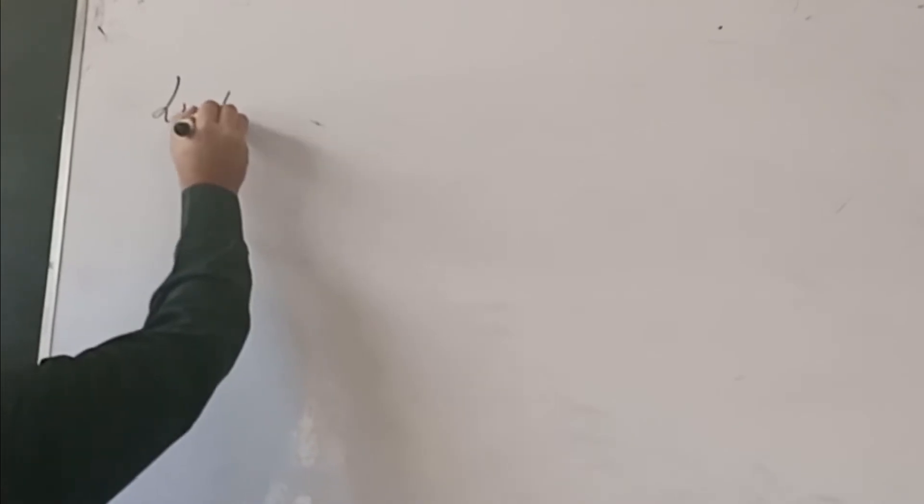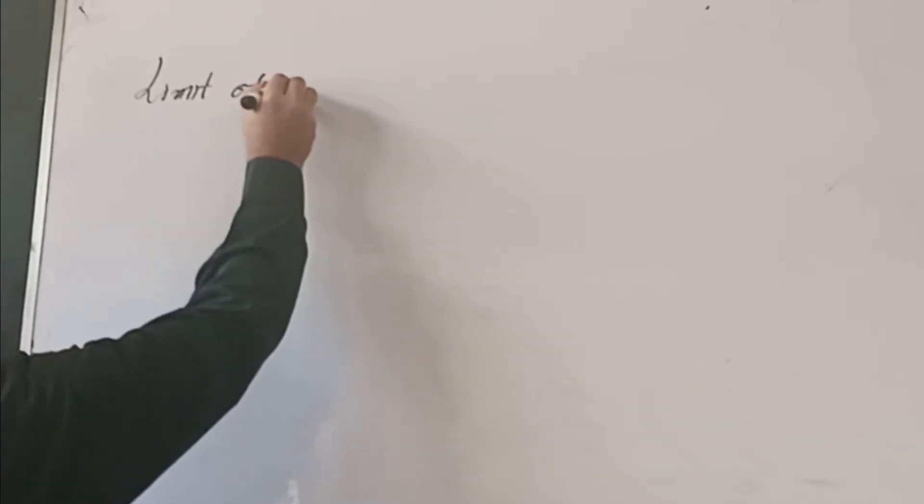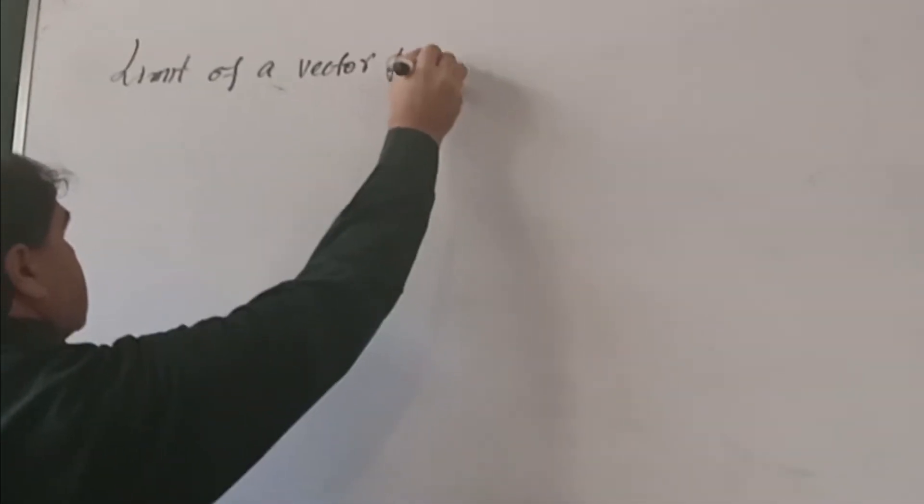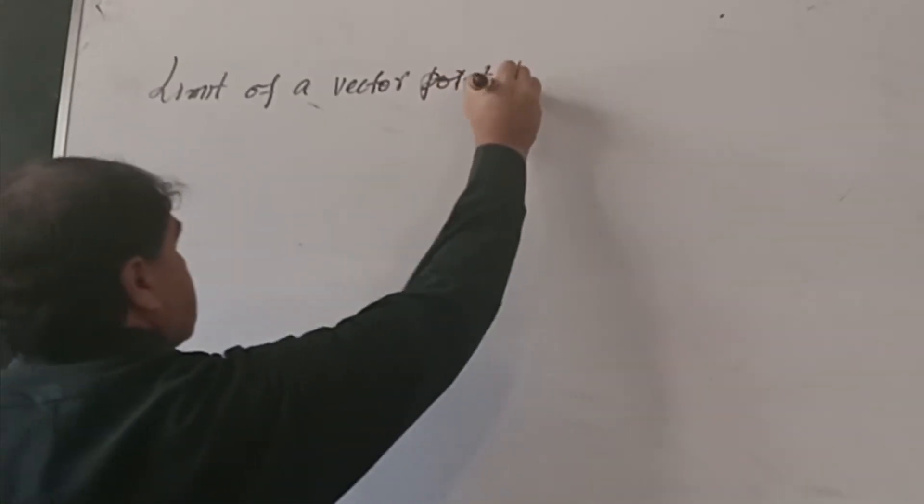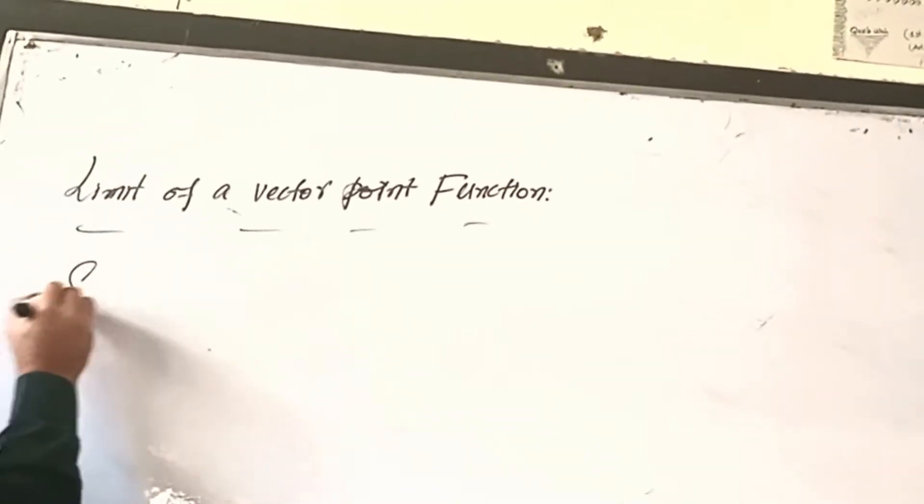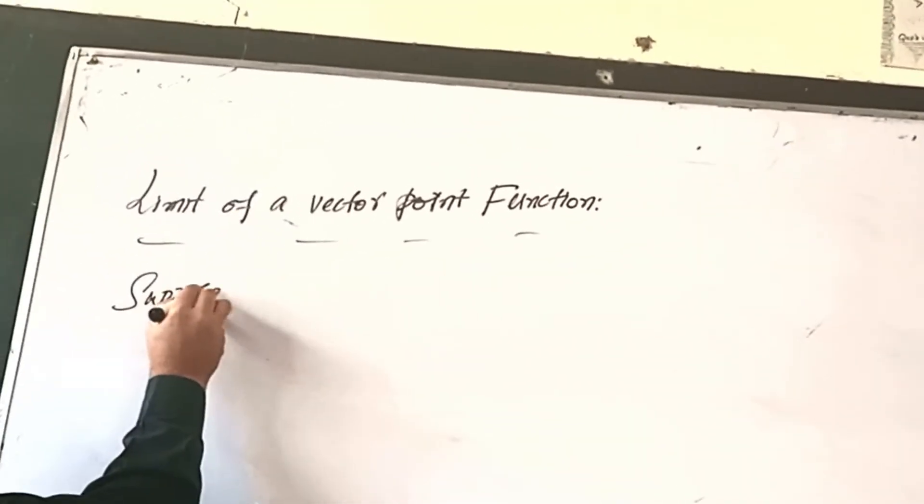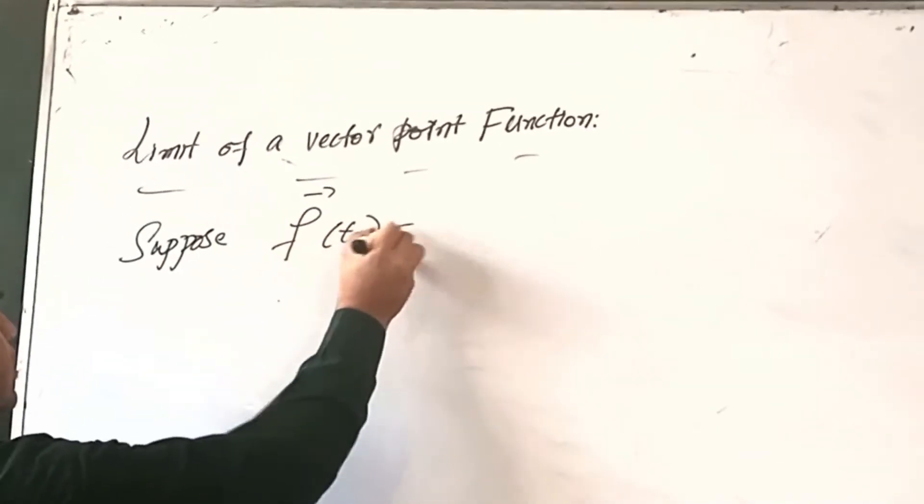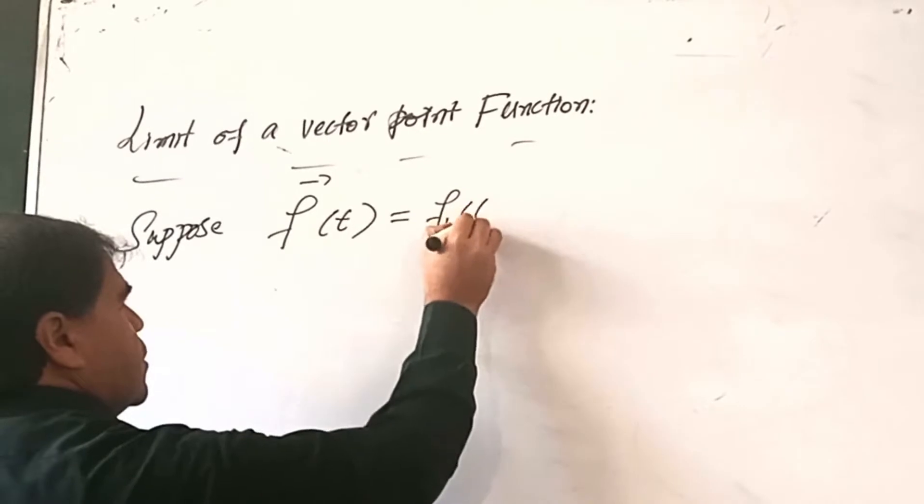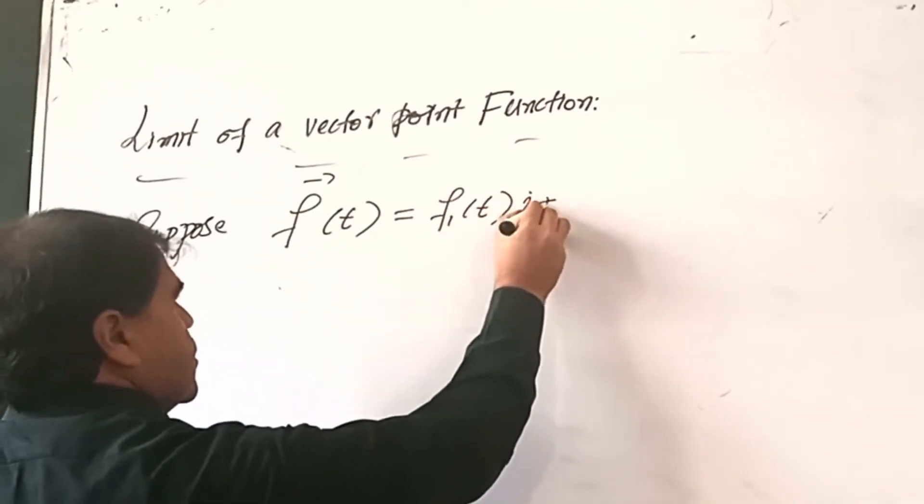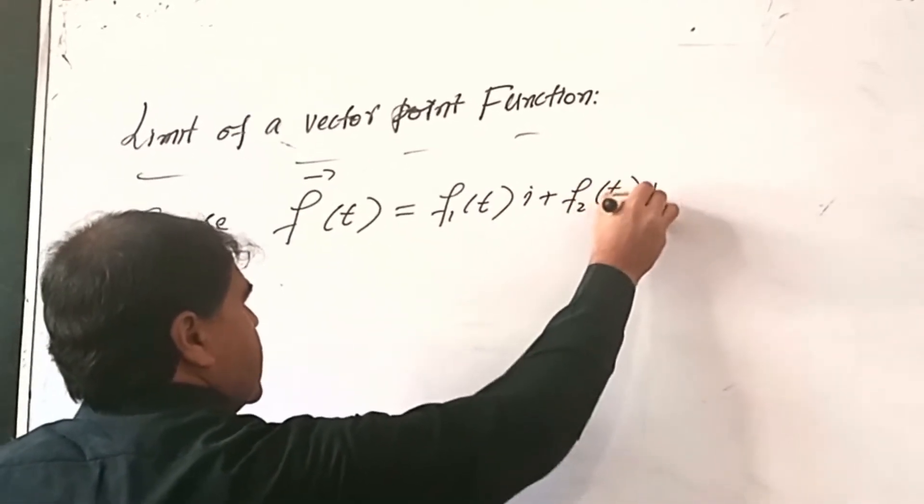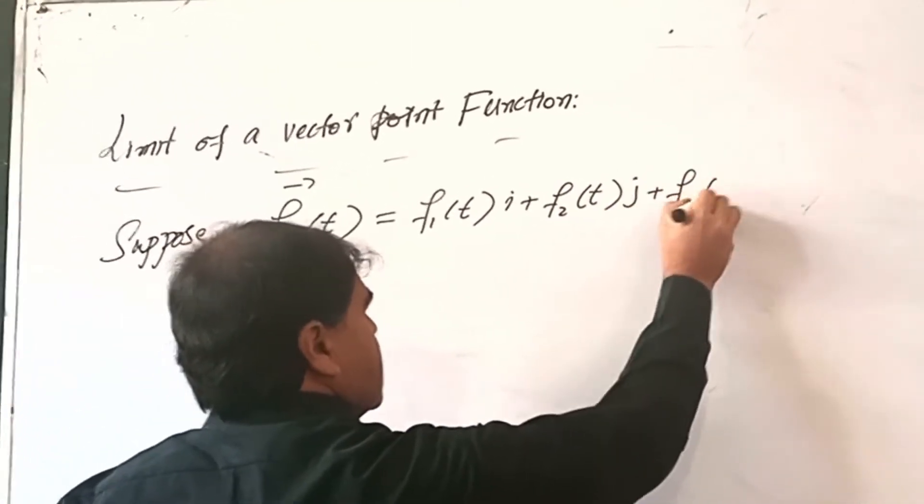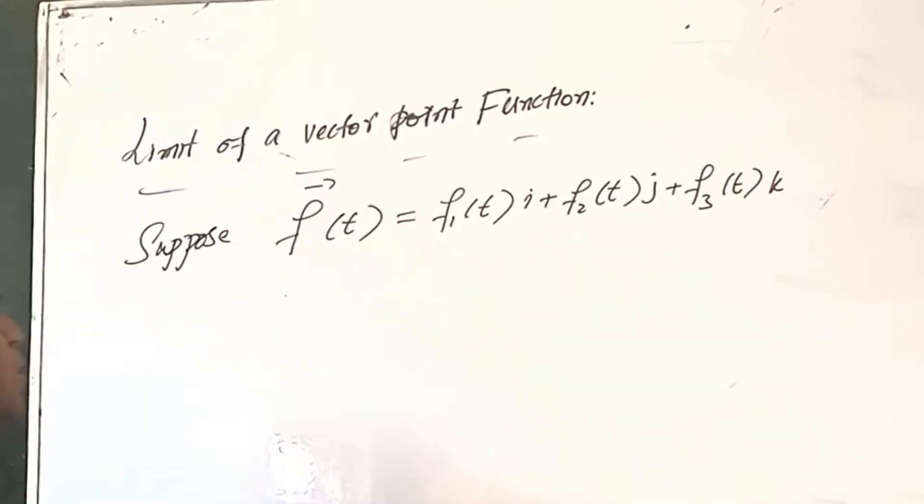The Limit of a Vector Point Function. Suppose F(t) = f1(t)i + f2(t)j + f3(t)k. When we want the limit of F(t) as t approaches a, it is denoted as limit t→a of F(t) and mathematically defined as limit t→a of F(t).